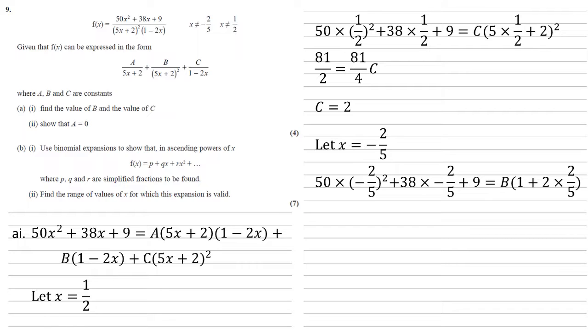So the left hand side we've substituted minus 2 fifths in. Right hand side we just end up with b times 1 plus 2 times 2 fifths. Simplifying this tells us that 9 fifths equals 9 fifths b, hence b is equal to 1.